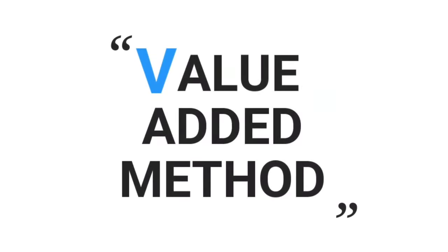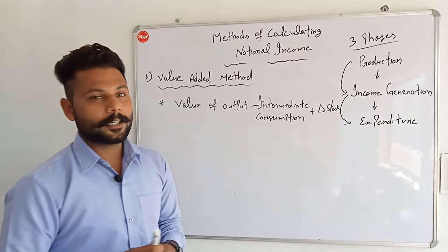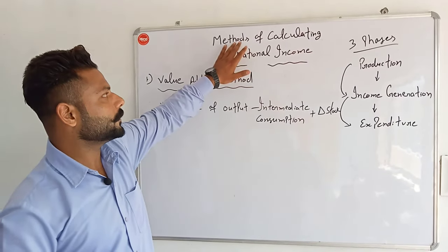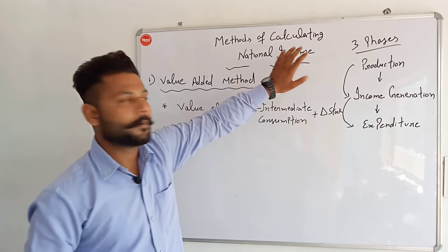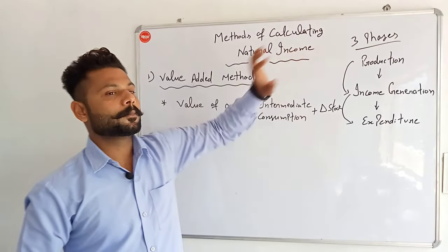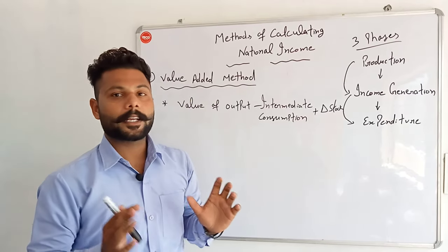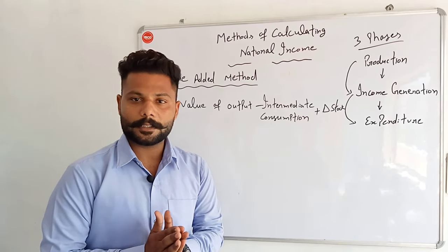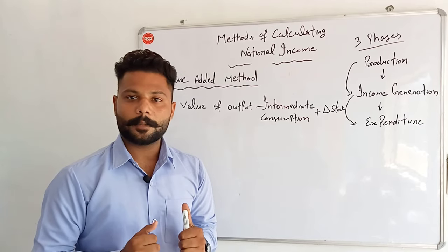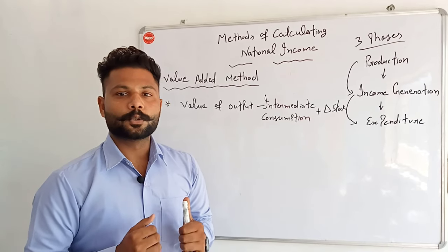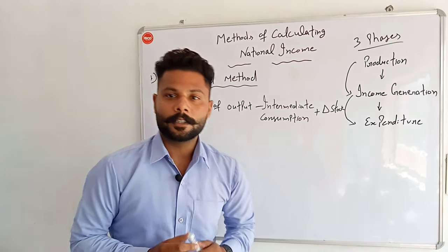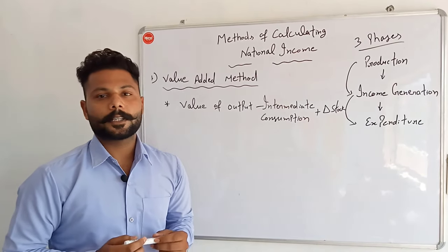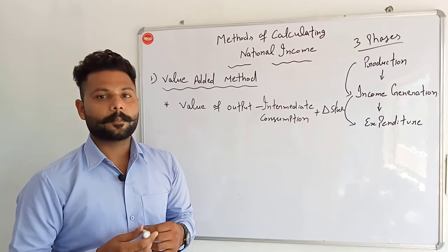I am going to talk about the methods of calculating national income. National income is calculated by three methods. The first is the value-added method. The second method is the income method. The third method is the expenditure method.